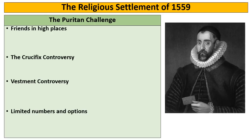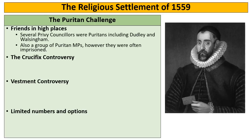Friends in high places is an element which makes the Puritans strong. Several of Elizabeth's Privy Councillors, including her closest friend Dudley and her spymaster Walsingham, are Puritans — they have the ear of the Queen. There's also quite a prominent group of Puritan MPs. However, their influence is often limited, and whenever they try to introduce Puritan changes into Parliament, they often end up imprisoned.